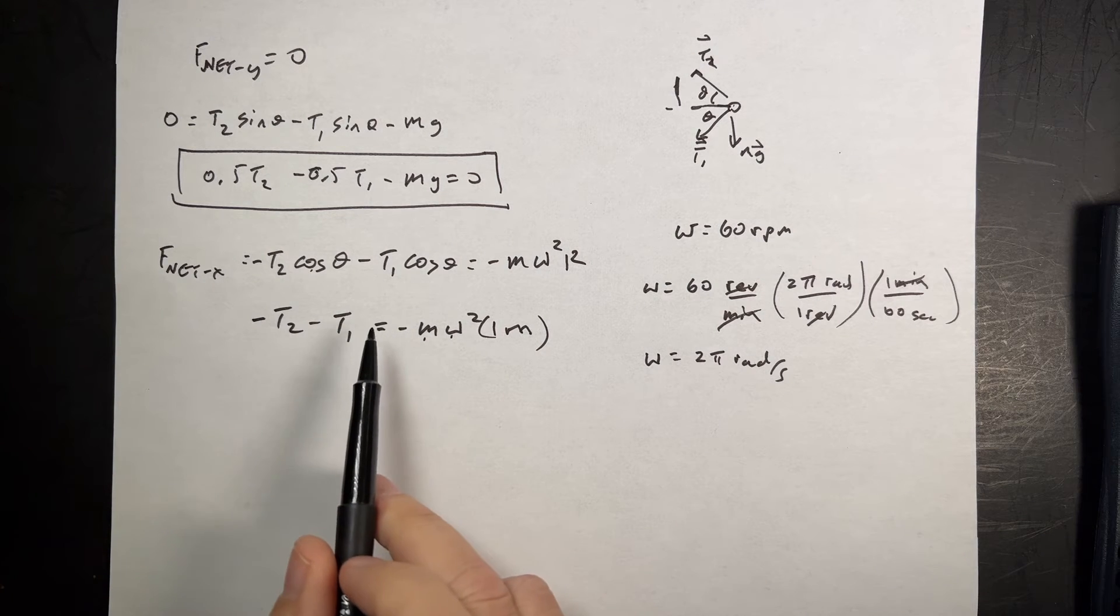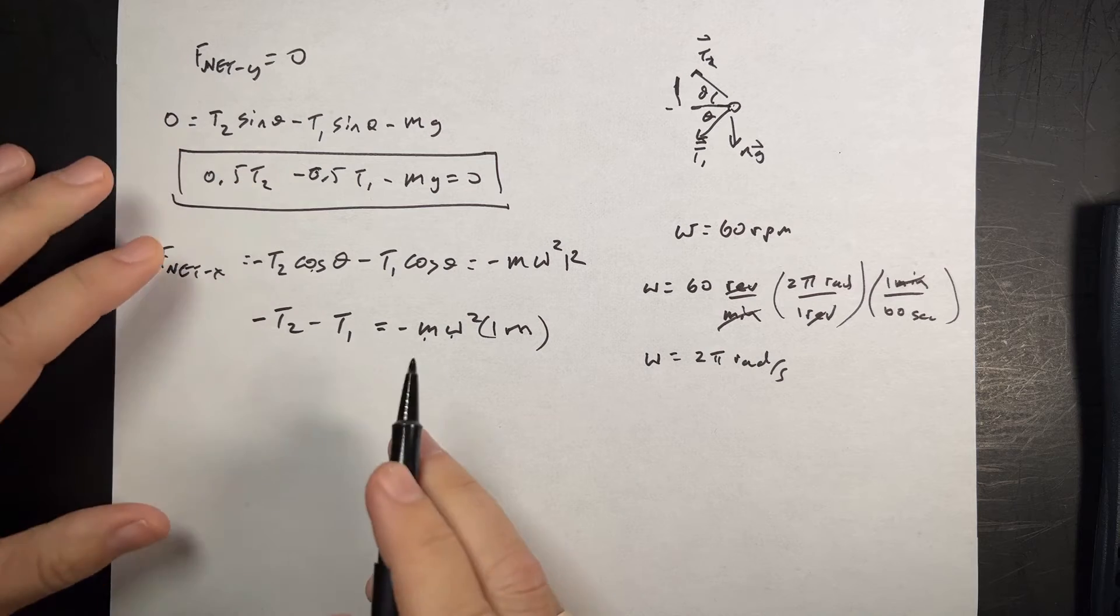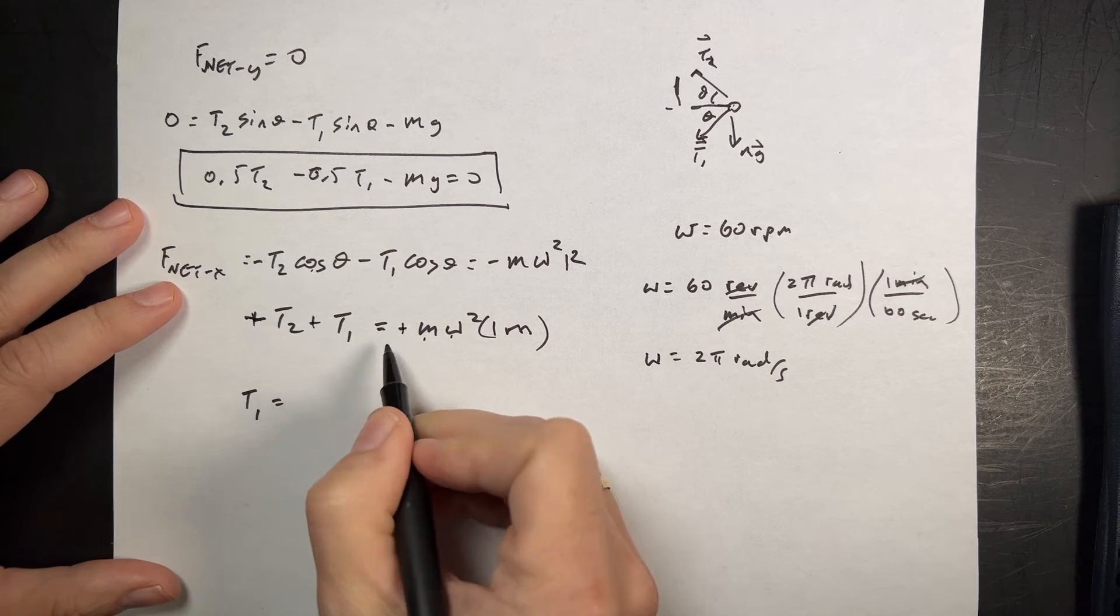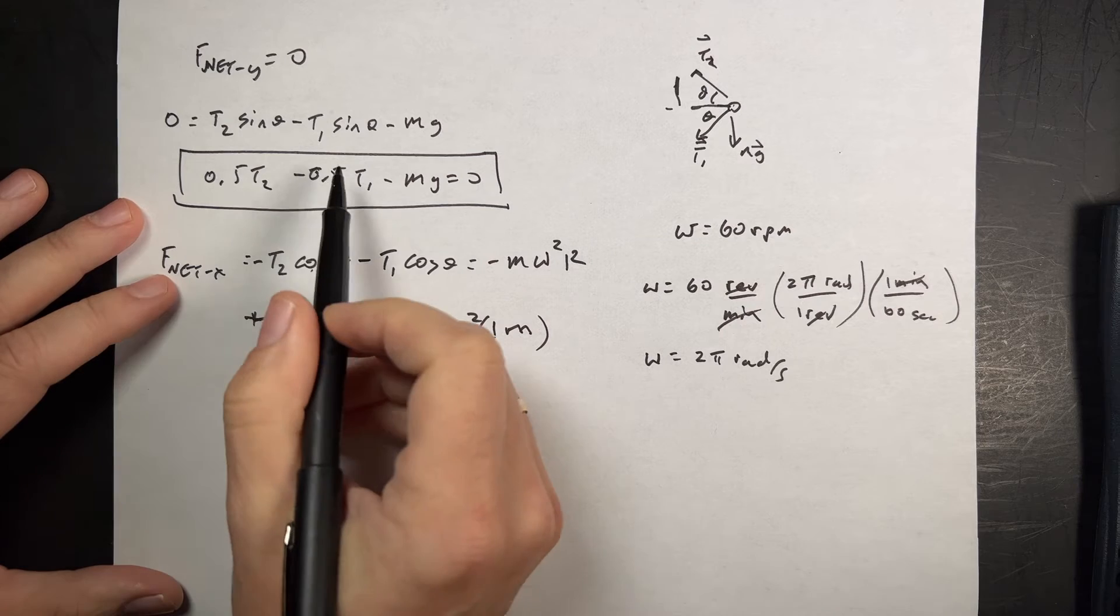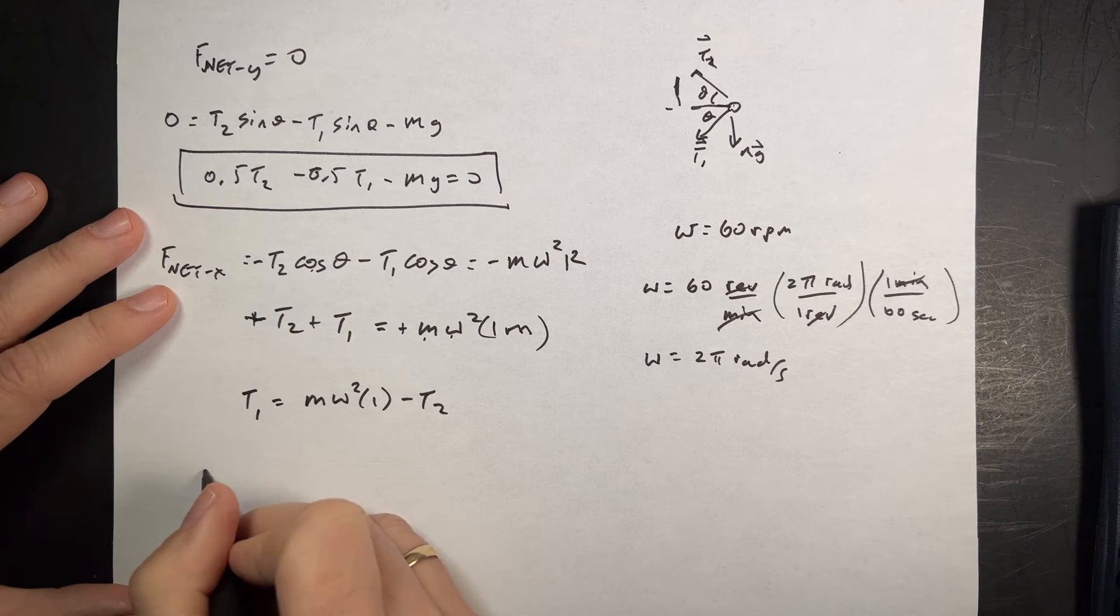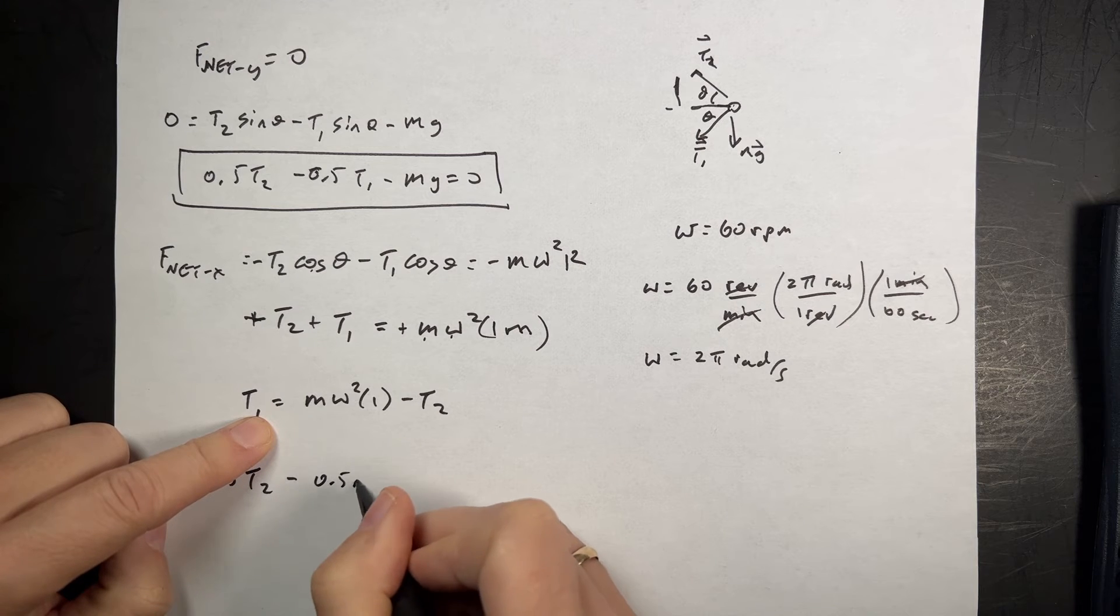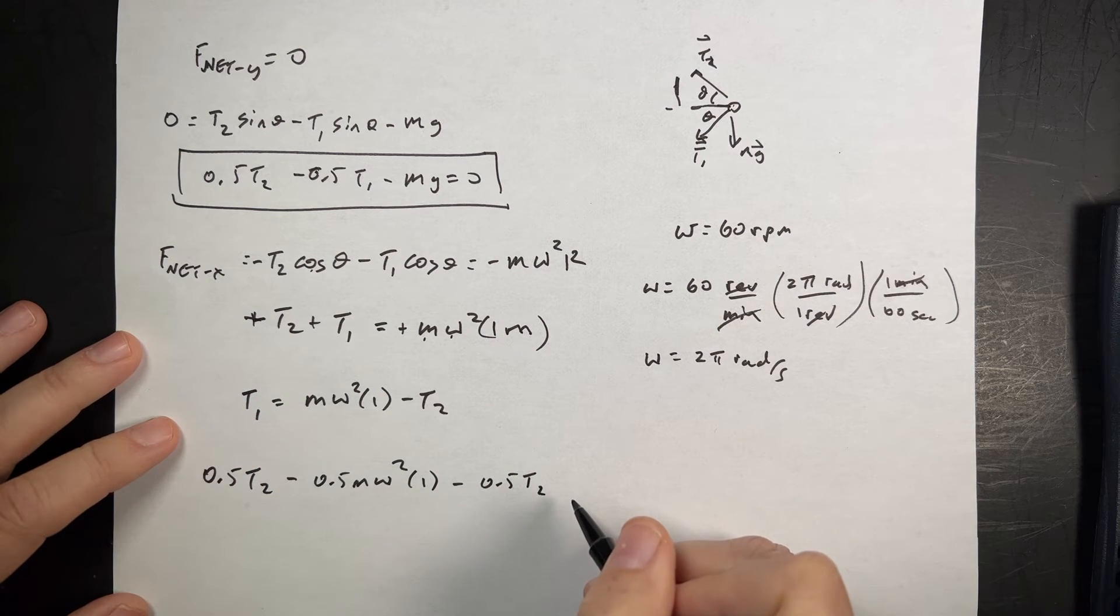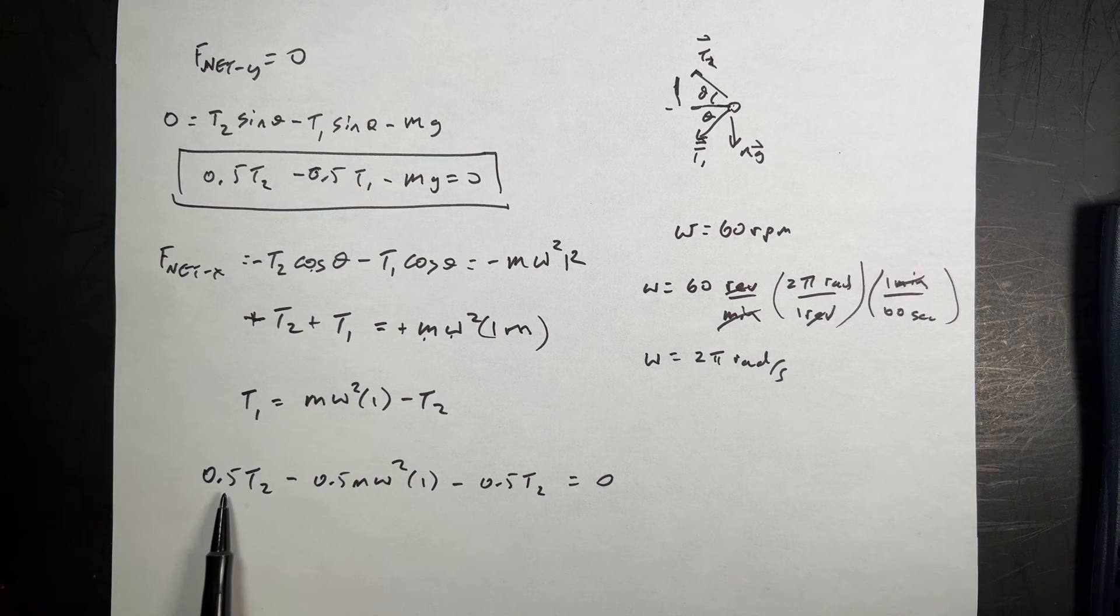So now I know omega. I know that. So I have two equations, two unknowns. Here are my two equations. Let's go ahead and solve this one for T1. And then I'll plug it up there. So T1 is going to be equal to, I can multiply both sides by a negative 1. So T1 is going to be equal to m omega squared times 1 minus T2. Now I can put that in up here and I get 0.5 T2 minus 0.5 times T1, which is going to be 0.5 m omega squared 1 minus 0.5 T2 equals 0. Oh, bad stuff happened. Because T2 is going to cancel. What did I do wrong?